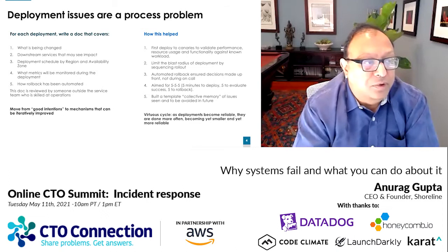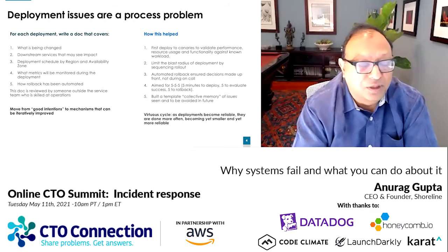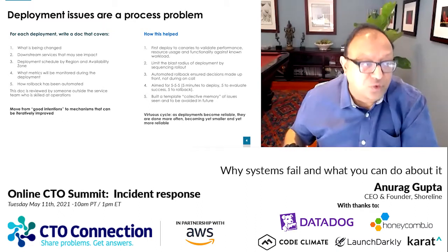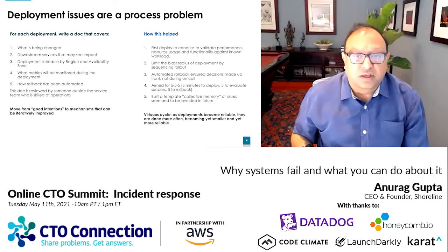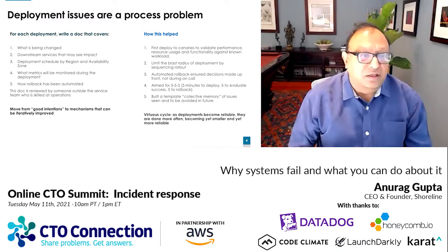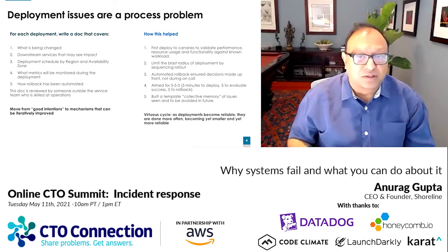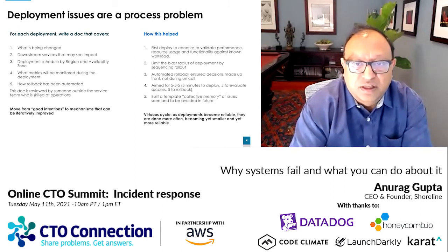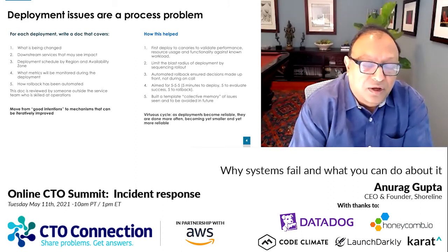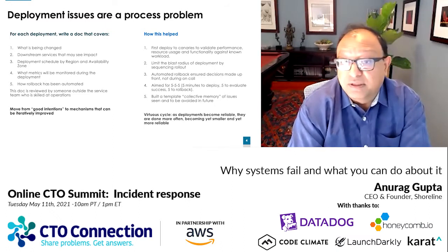For each deployment, we'd write a doc covering what's being changed and the downstream services that should be aware and may see impact. Very importantly, we organized the deployment schedule by availability zone and region to limit the blast radius of the change. You described which metrics you were monitoring, and you described how rollback was going to be automated if the metric was out of band.